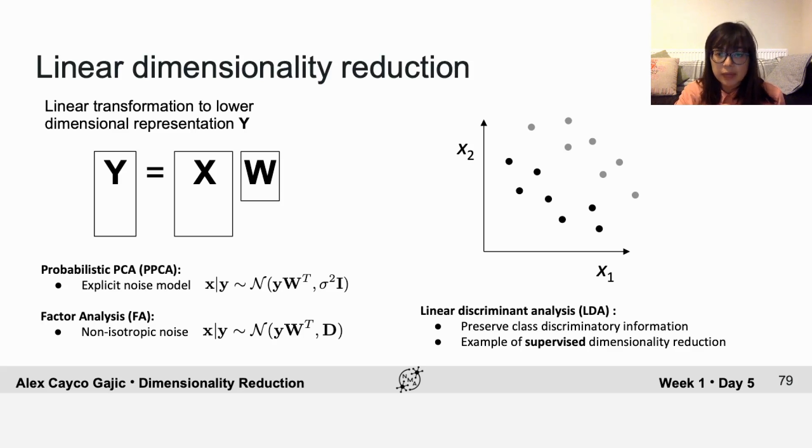In this example, the black data points correspond to stimulus 1 and the gray data points correspond to stimulus 2. So running PCA, you would find this direction that captures most of the variance in the full data set. And if you run LDA, you would find the direction that captures information about the two stimuli. So LDA can be very useful when looking for directions that represent information about different stimuli or different behavior in your neural data set.